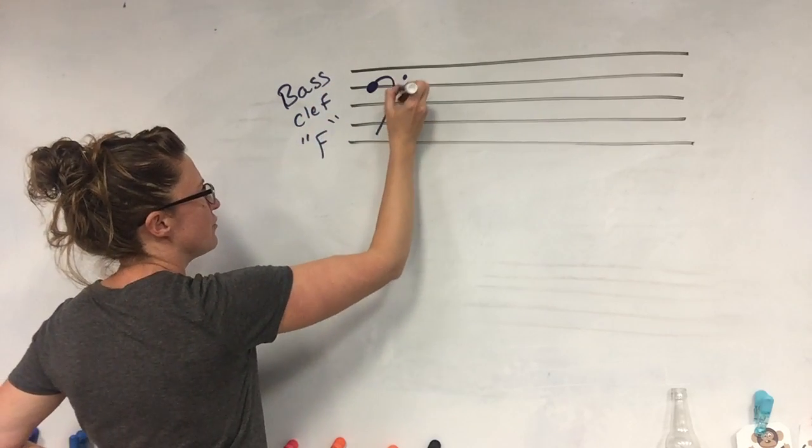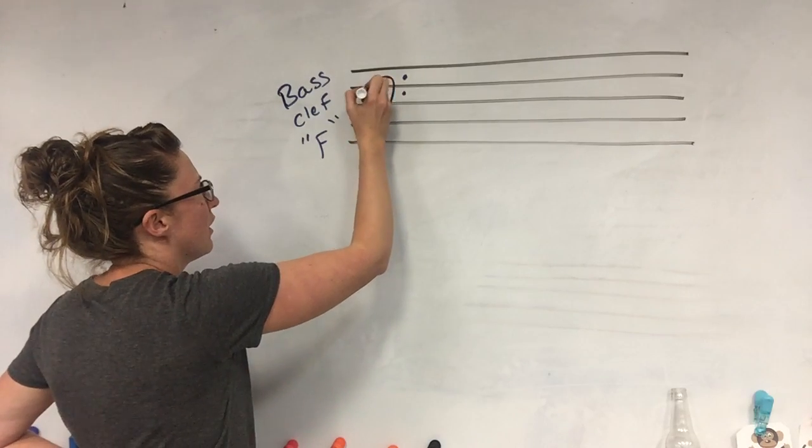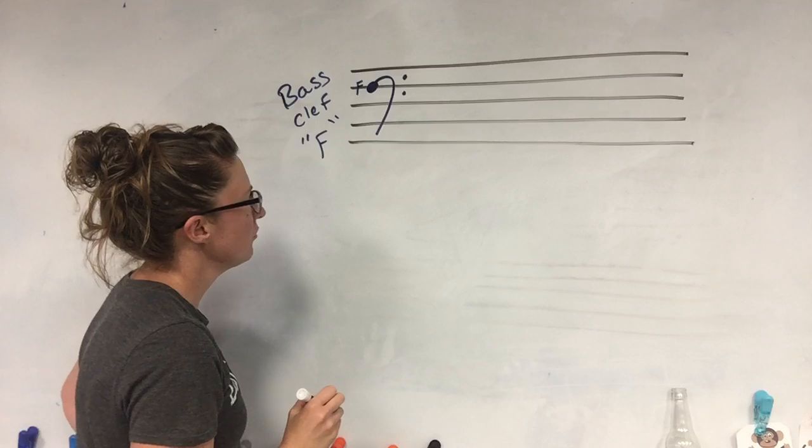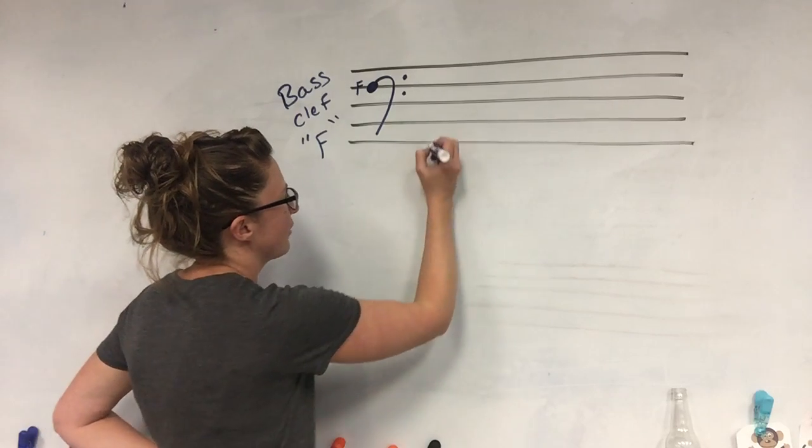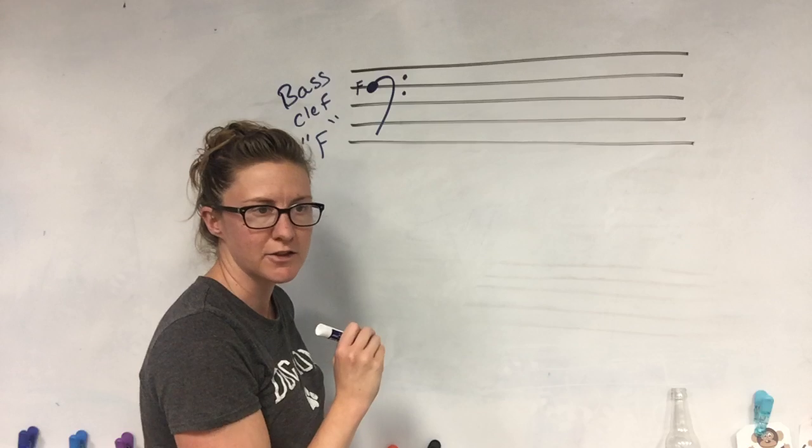as the F clef, because if you draw lines right here it could look like an F. It also hangs out around the F line. Starting with the spaces, unfortunately it does not spell a word like the treble clef